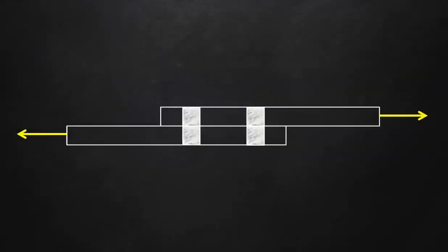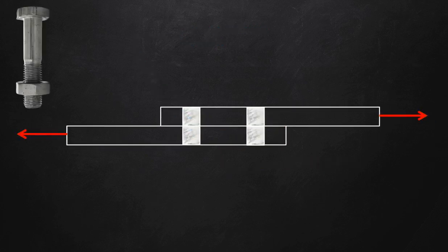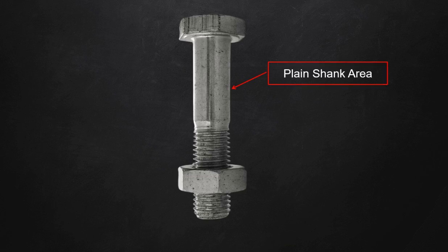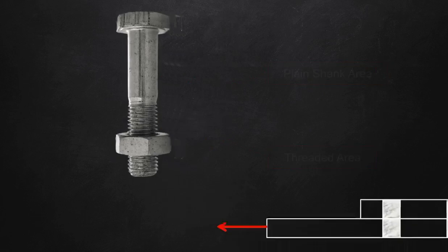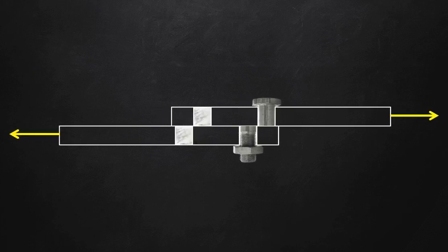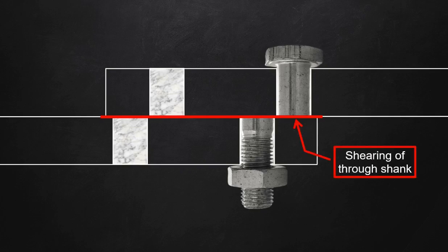To understand this: suppose two plates are connected in a lap joint with two bolts and a tensile load is acting. When the load exceeds the shear strength of the bolt, it shears into two parts. The location where shearing happens is known as the shearing plane. A bolt has two areas: the plain shank area and the threaded area. When placed in a lap joint and tension is applied, the bolt shears. The location of shearing is the shear plane — if it occurs in the shank area, it is shearing through the shank; if in the threaded area, it is shearing through the threaded portion.